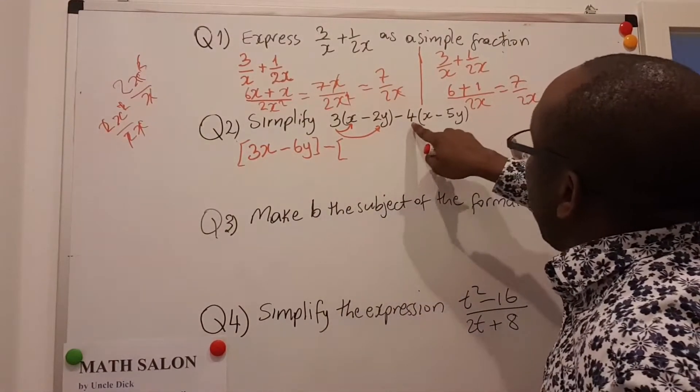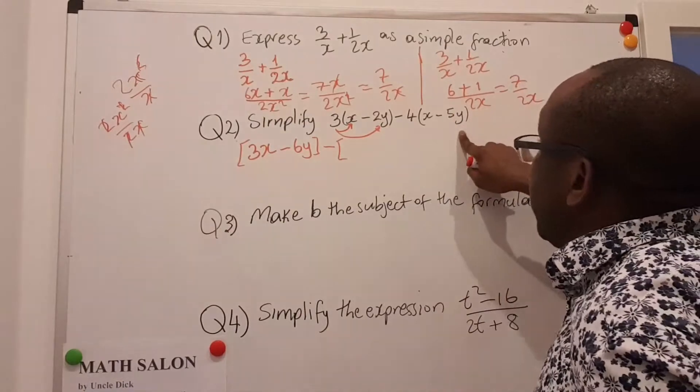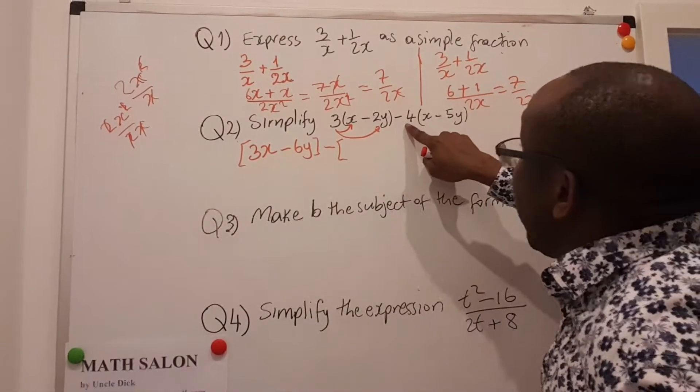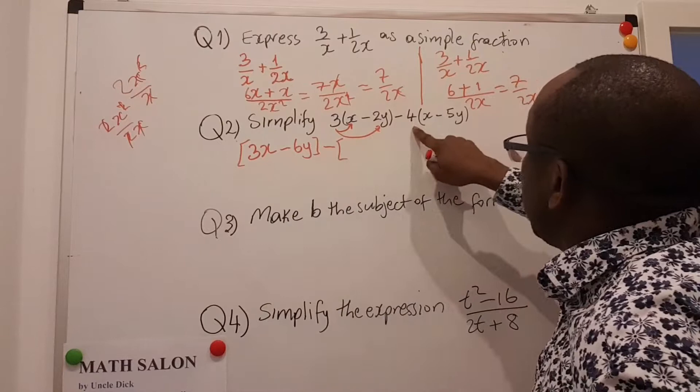If we keep minus outside, then we have to take only positive 4 inside. Otherwise we change it to plus and you take minus 4. So let's keep the minus and take positive 4.